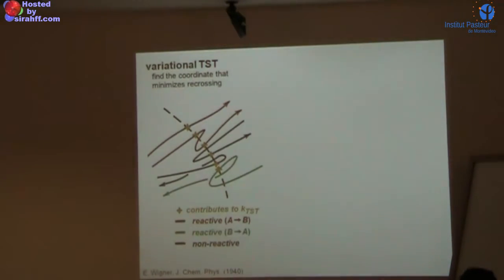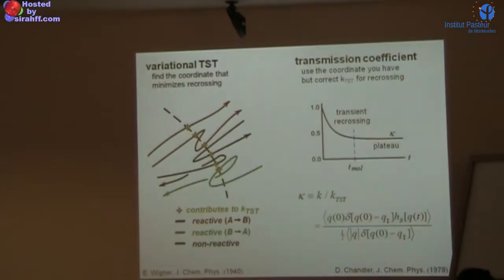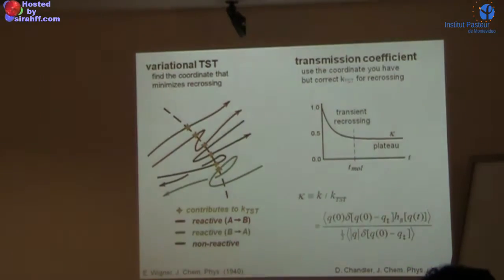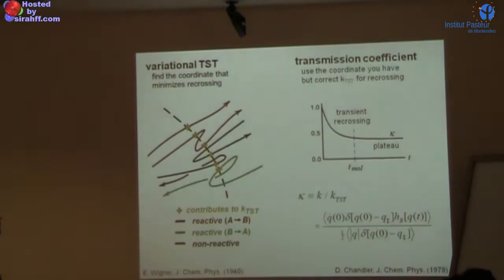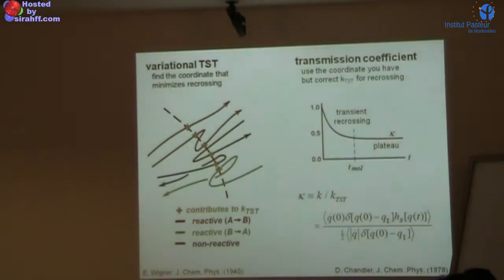Since then, things have evolved. It's very difficult to do this coordinate optimization. So what people started to do around 1980 was instead to use the coordinate they have and come up with a way of correcting the TST rate constant for the effects of recrossing. This transmission coefficient is a time correlation function that tells you what are the effects of transient recrossing behavior at the top of the barrier. After some short time, all the trajectories have decided which direction they're going, and this correlation function decays to a value giving you a correction, kappa, to the TST rate constant.